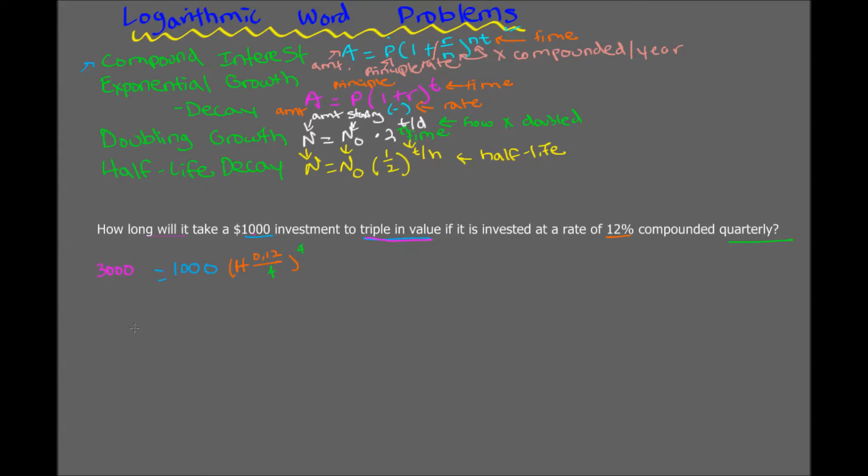T is not given because it's asking how long will it take. So we need to find T, and therefore we're going to leave it as the variable T. Let's first simplify this equation that we have. So we have 3,000 is equal to 1,000 times, well, 0.12 divided by 4 is equal to 0.03, and then 1 plus 0.03 is equal to 1.03. So we can just simplify that to 1.03 to the 4T.